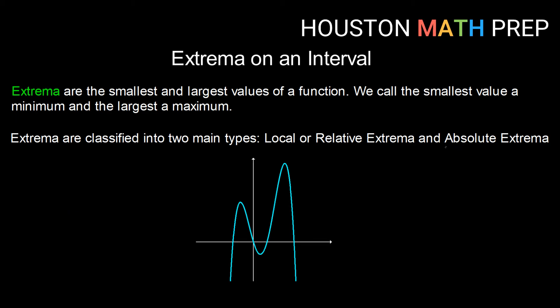Let's start with absolute extrema. Absolute extrema is the biggest of all large values for an absolute max, and the smallest of all small values for an absolute minimum. Whereas a local or relative extrema is a little bit softer — it is just saying this y value is larger than those around it for a local maximum, or smaller than those around it for a local minimum.